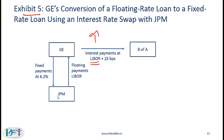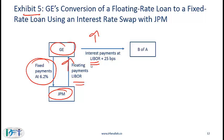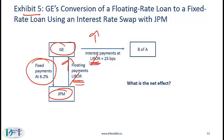Let's say you are the CFO of General Electric. You have borrowed long-term from Bank of America and are making interest payments based on a floating rate — specifically LIBOR plus 25 basis points. You are concerned about interest rates going up. To convert this floating rate loan into a fixed rate loan, you can engage in an interest rate swap with JP Morgan where you as GE make a fixed payment and receive floating. This cancels out the LIBOR payments, and the net effect is that your total payments are 6.25% fixed plus 25 basis points = 6.45% fixed.